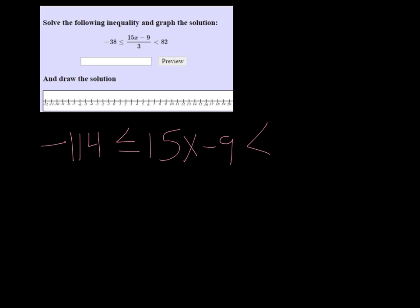Now remember the middle, I'm multiplying it by 3, but it's going to divide out with the 3 in the bottom. And then 82 times 3 is 246.